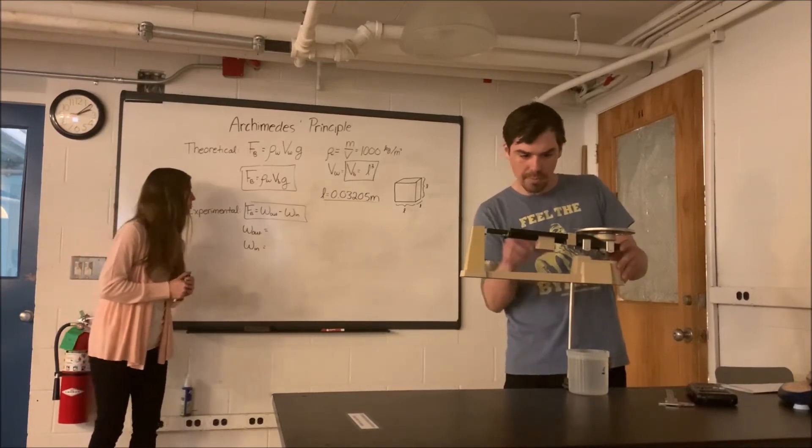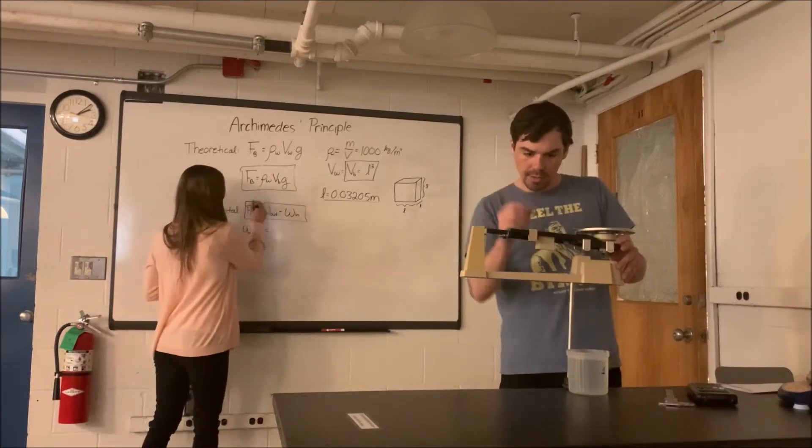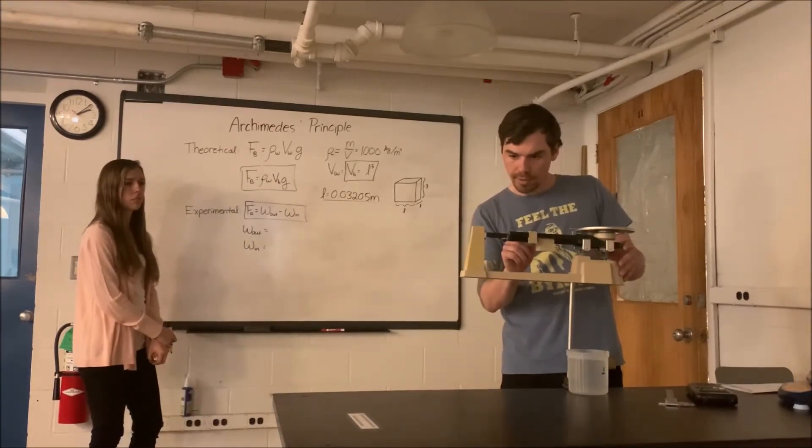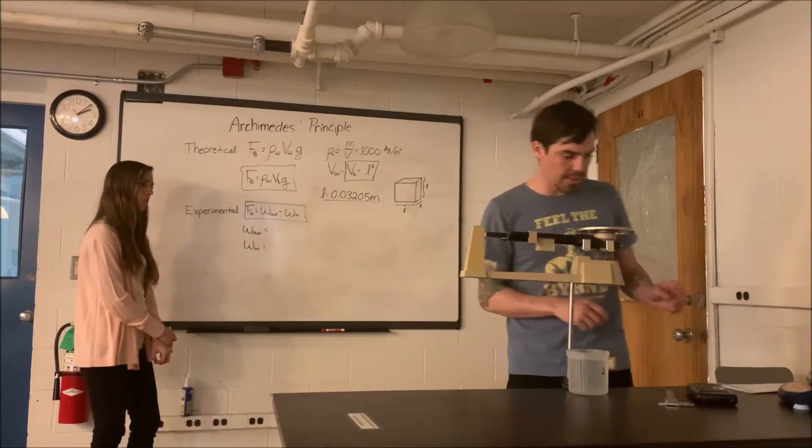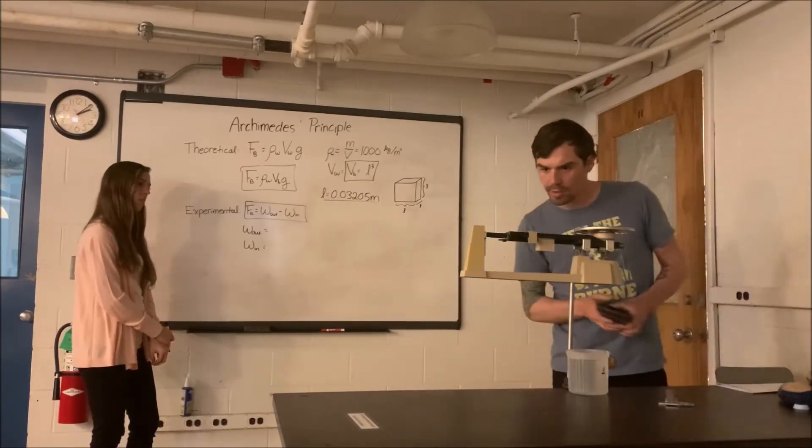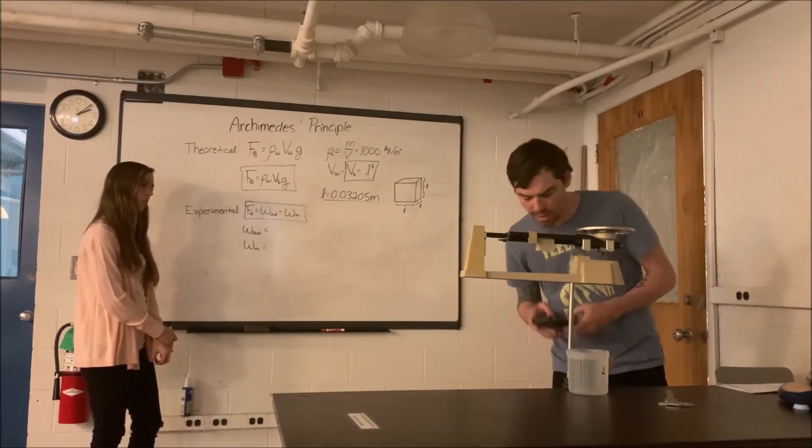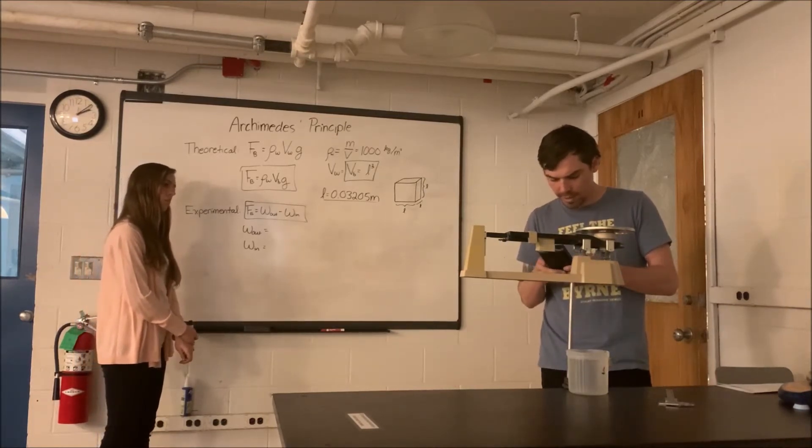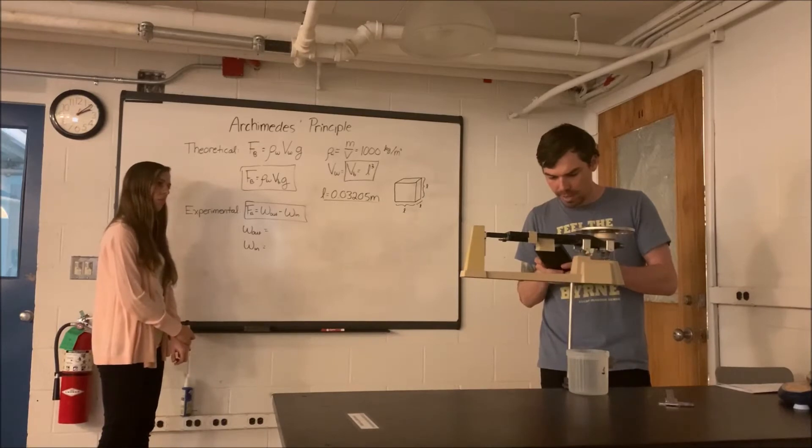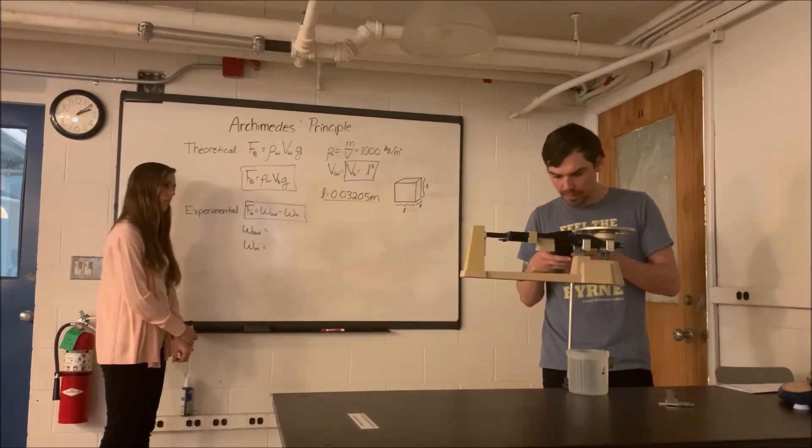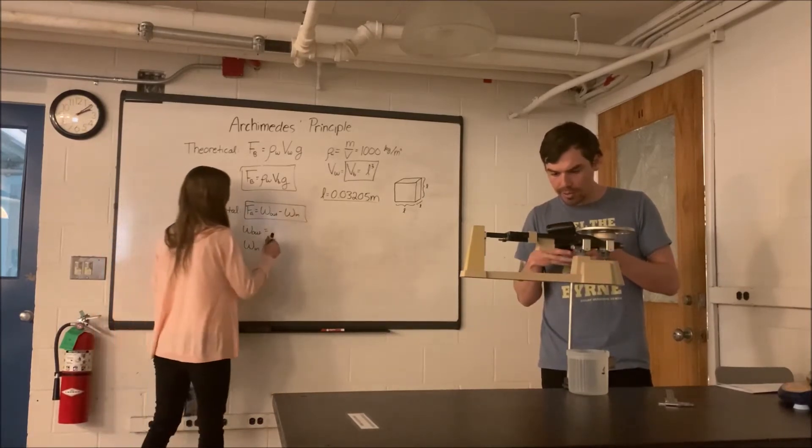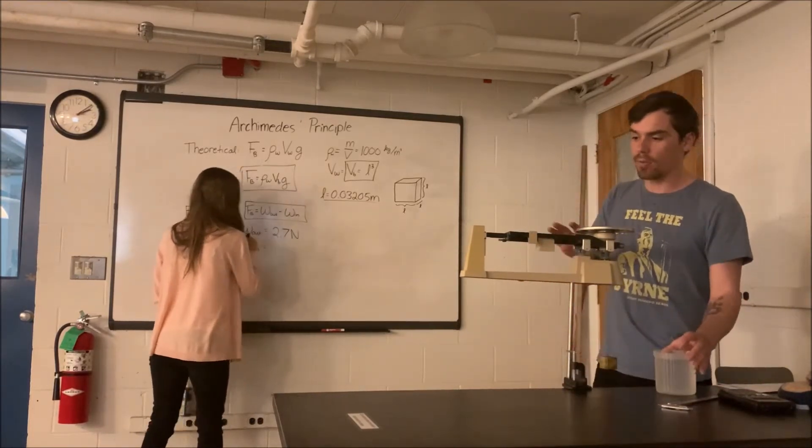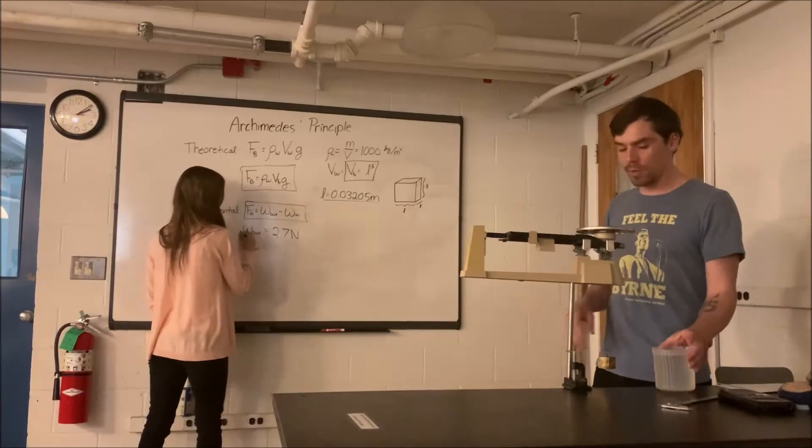So my triple beam balance is giving me the mass. The apparent mass is 0.2751 kilograms. I want to multiply that by 9.8 meters per second squared, and that is 2.7 newtons. So the apparent weight out of water is 2.7 newtons.